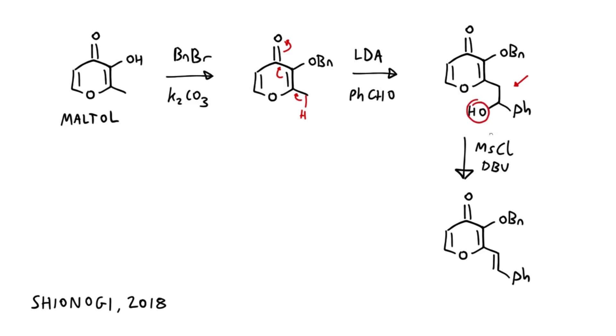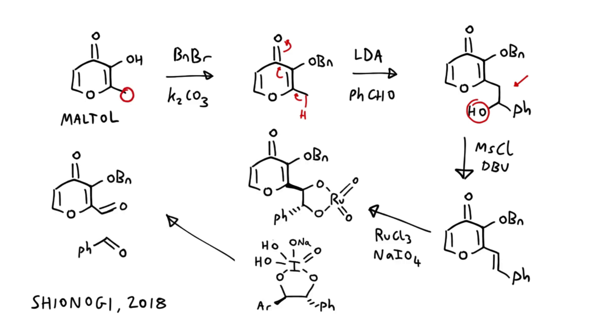The hydroxy group can be converted to a leaving group with mesyl chloride and eliminated with DBU to form an alkene product. It looks like we're heading in the wrong direction because we want an acid at this position, but the next step is a neat way to get that acid.